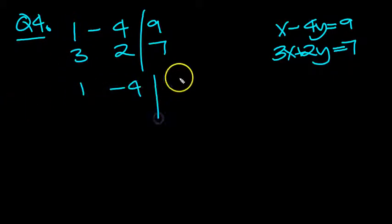So we've got 1 minus 4 and 9. And then row 2, take away 3 row 1. That, take 3 of those, is 0.